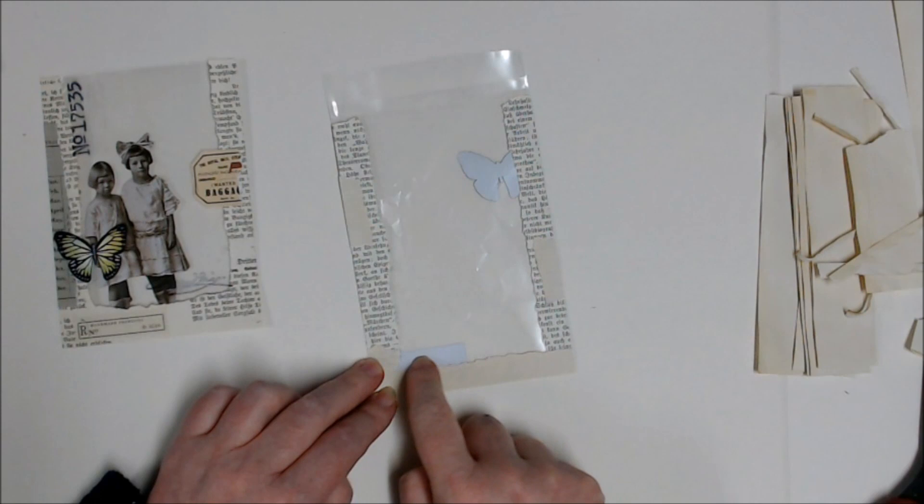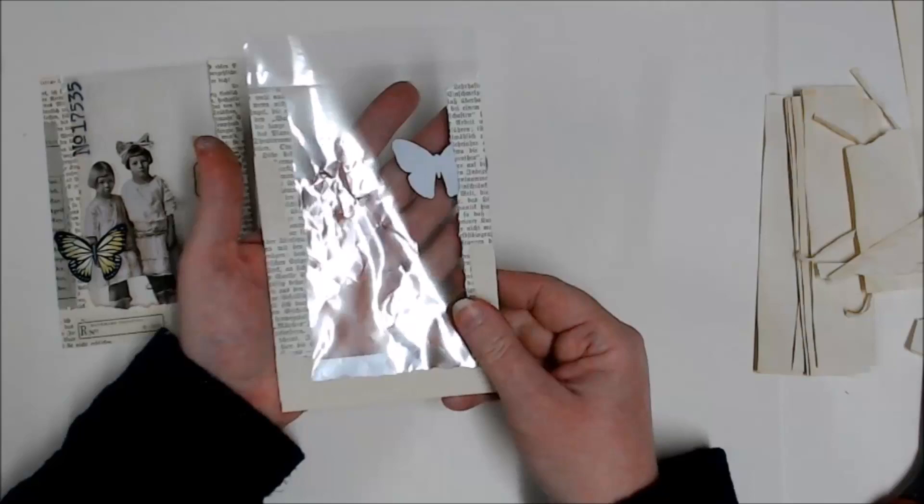Now if I turn that over, you'll see that I have this plain white area here and you can also see the back of my butterfly. So this isn't really double-sided now.